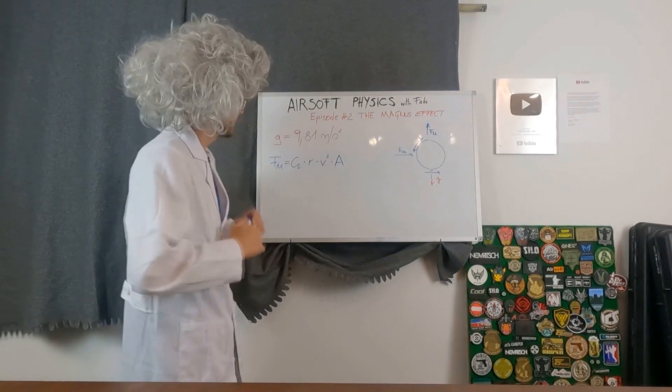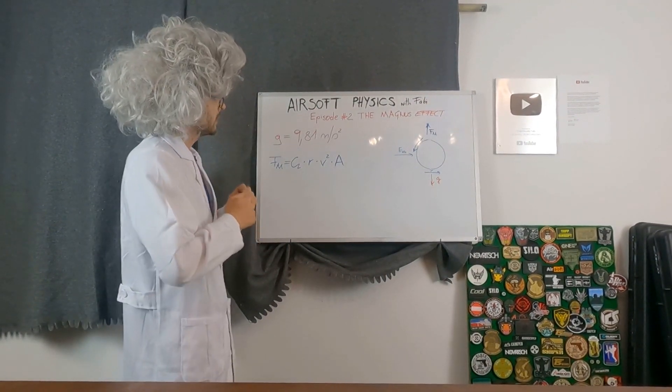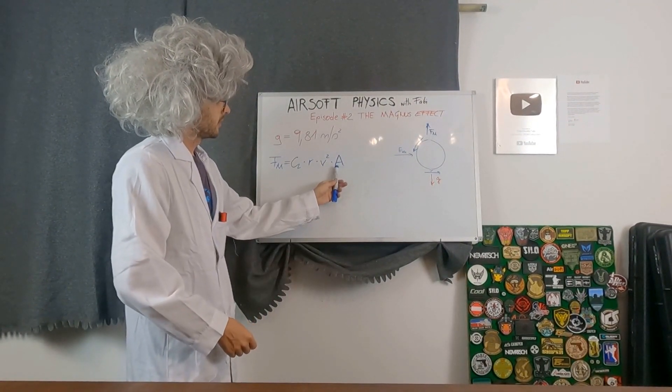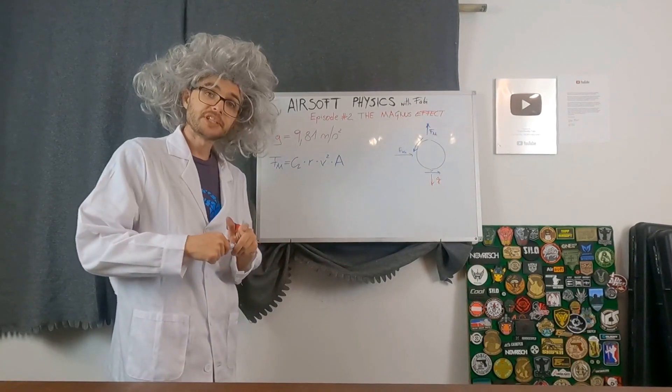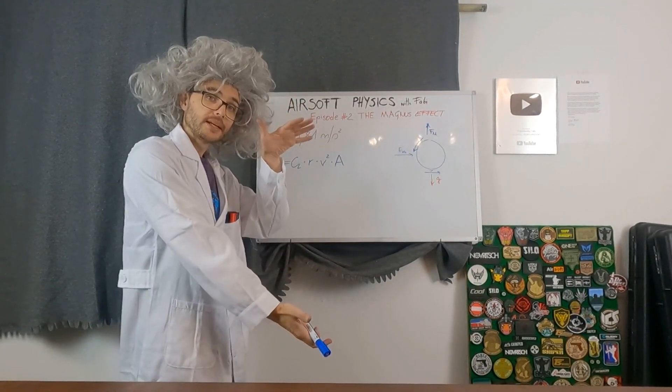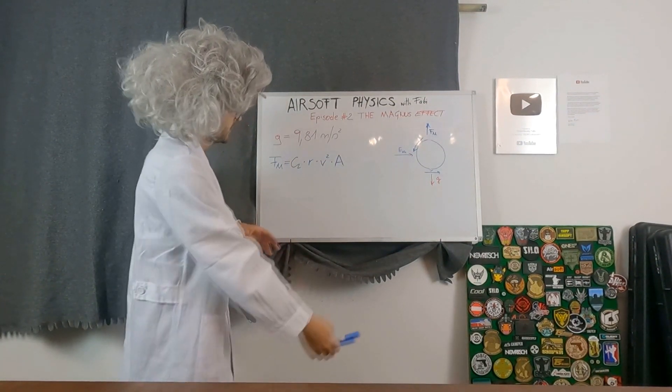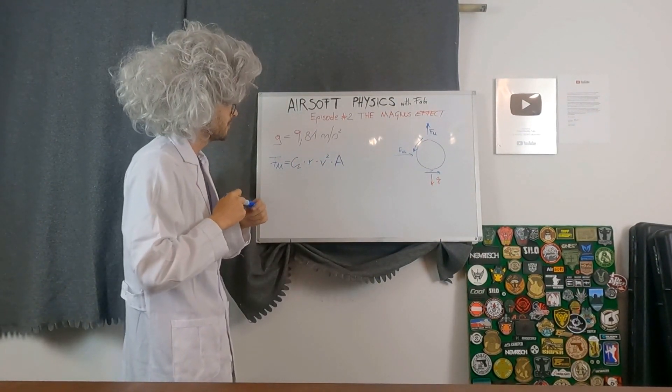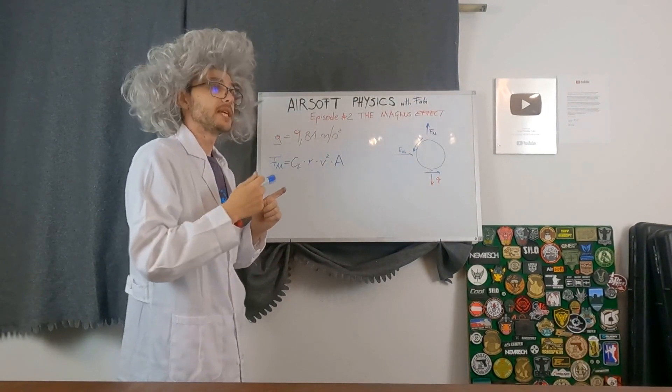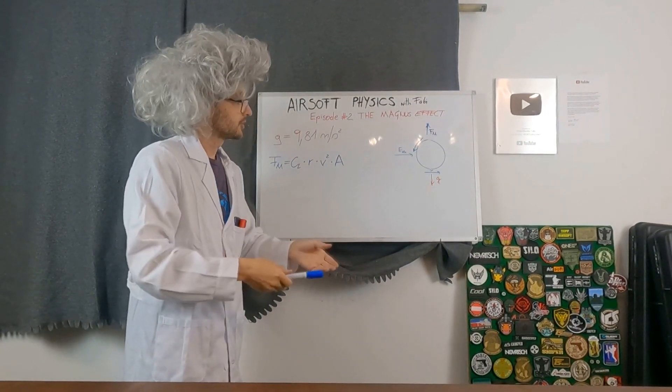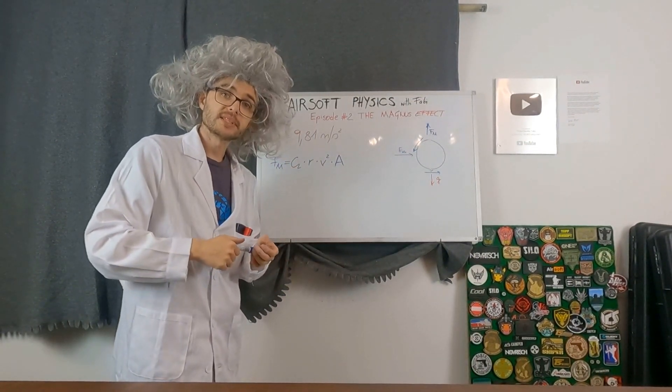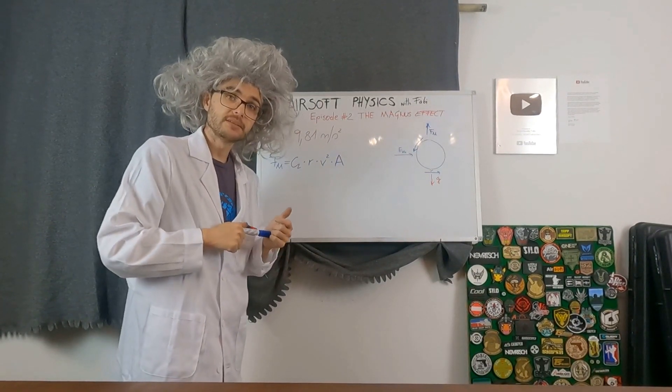What does this equation now tell us? It tells us the Magnus force will be bigger if we raise the surface area of the BB. So make the BB bigger. Bigger object makes a lot more Magnus force. How fast the projectile is moving squared, which is even more important. So the faster your BB travels, the more Magnus force it produces.